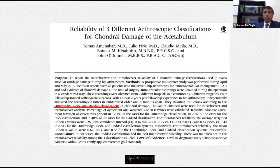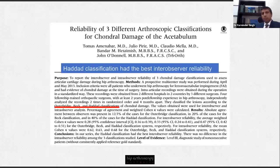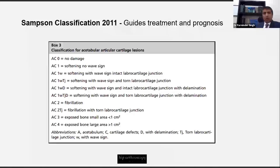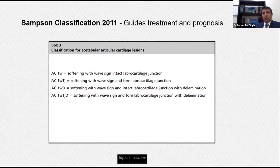John O'Donnell recently reported on which was the most reliable classification system among the most widely quoted — the Outerbridge, the Beck, and the Haddad — and found that the Haddad had the best intra-observer reliability, while all classification systems had comparable inter-observer reliability. One classification not considered in this paper was the Tom Sampson classification, which describes quite eloquently what we actually see in the acetabulum during a wave sign, including the associated chondrolabral junction stability, making it helpful for guiding treatment.